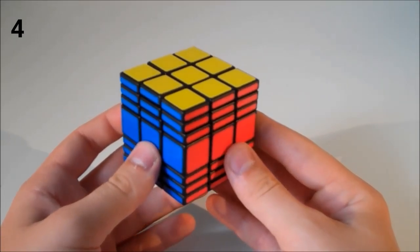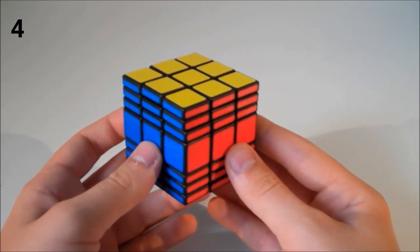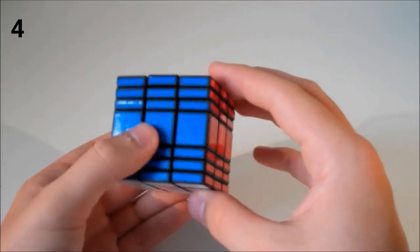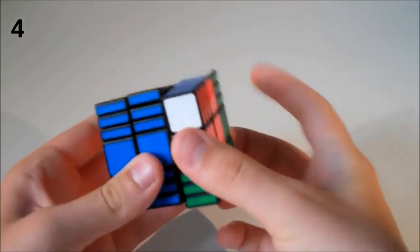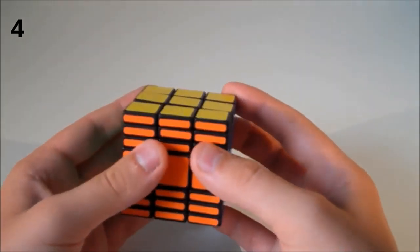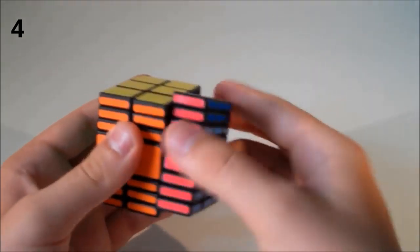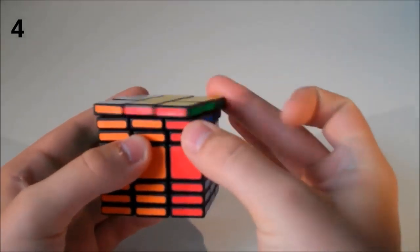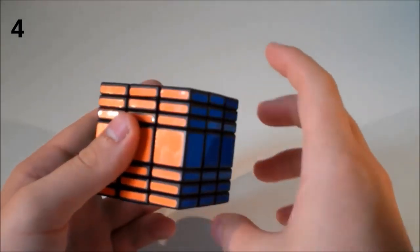At number 4 we have the Cube4U 3x3x7. Now as you probably know I love the cuboids and this is one of my favorites. It's the biggest 3x3xn puzzle that I have and it's my favorite to solve. I just love the look of this puzzle and how it turns. It's just a really great puzzle and I really enjoy solving it.